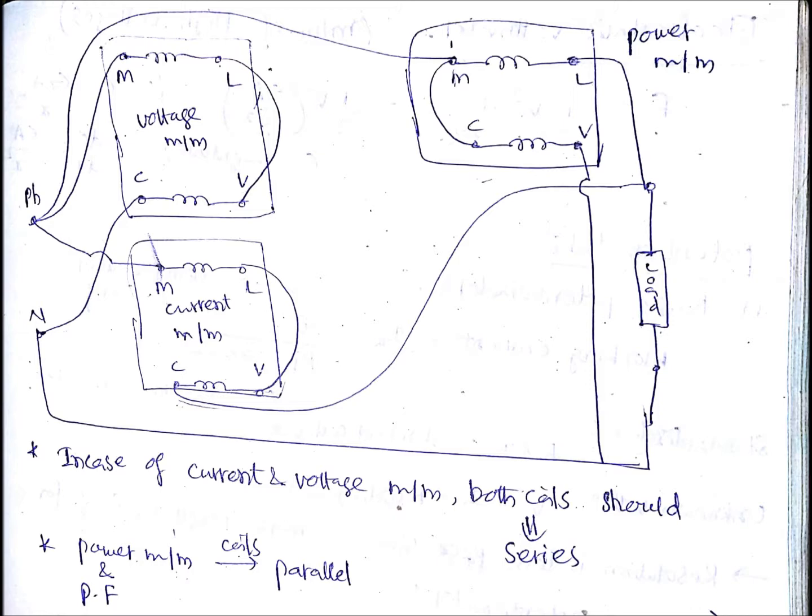Similarly for current measurement, both coils are connected in series along with the load through which you want to measure the current. C is connected to the load and the load negative terminal is connected to the neutral, as shown in the second figure.